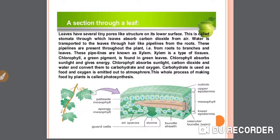Leaves have several tiny pore-like structures on their lower surface called stomata, through which leaves absorb carbon dioxide from air. Water is transported to the leaves through hair-like pipelines from the roots. These pipelines are present throughout the plant, from roots to branches and leaves, and are known as xylem. Xylem is a type of tissue.